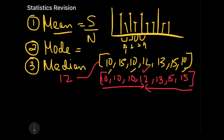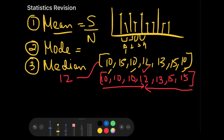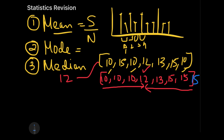If we had an even number of data points — say we add one more 15 to make eight elements — then two numbers are in the middle: 12 and 13. For even data, the median is the average of the two middle numbers, so (12 + 13) / 2 = 12.5. That would be the median. This is how we calculate mean, median, and mode.